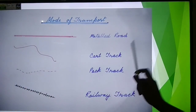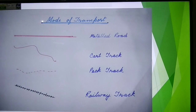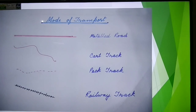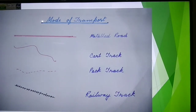Car track is also called motorable. Motorable means this car track cannot be crossed by cars and motors during rainy season, and that is due to the mud or water. So car track is a motorable road.